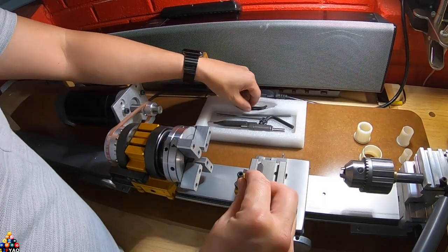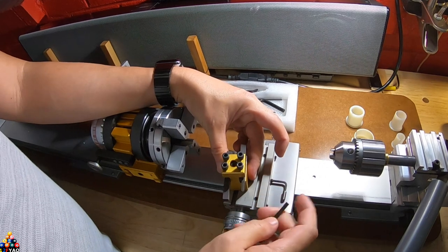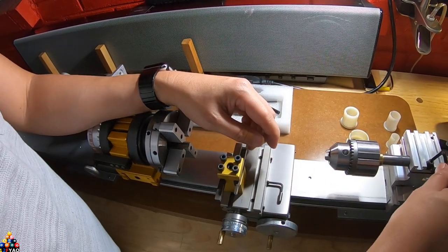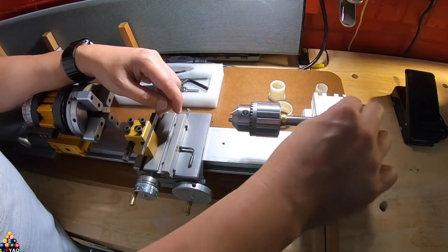Most important probably is this allen wrench because this changes the angle of your tool bit and this also loosens and tightens your tailstock.